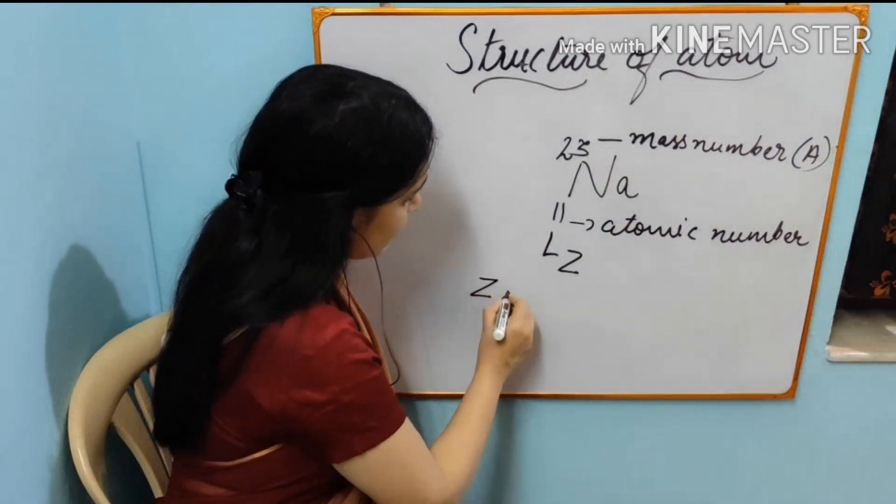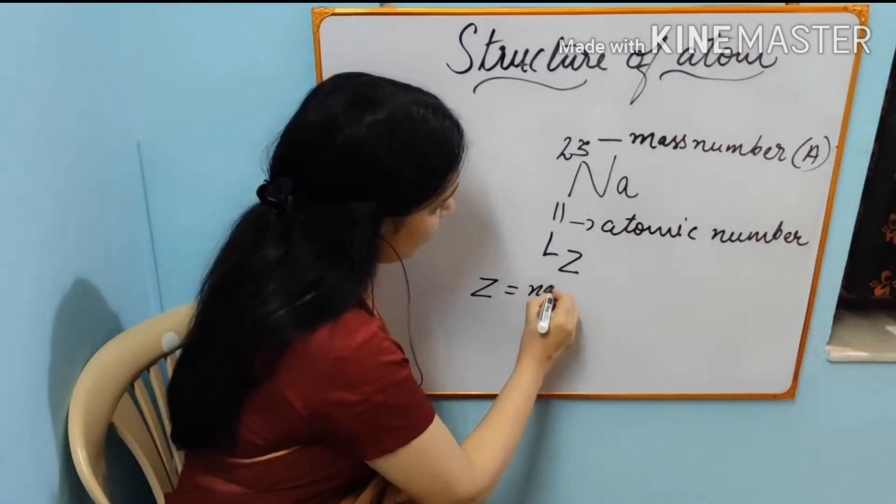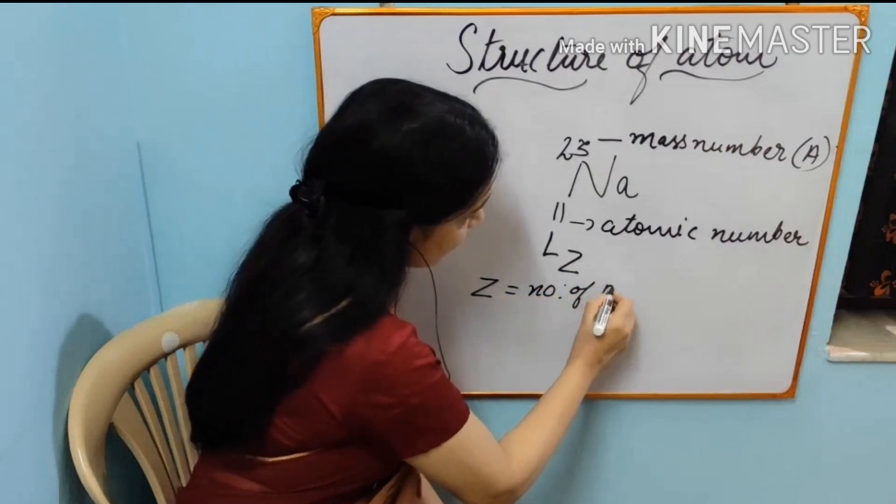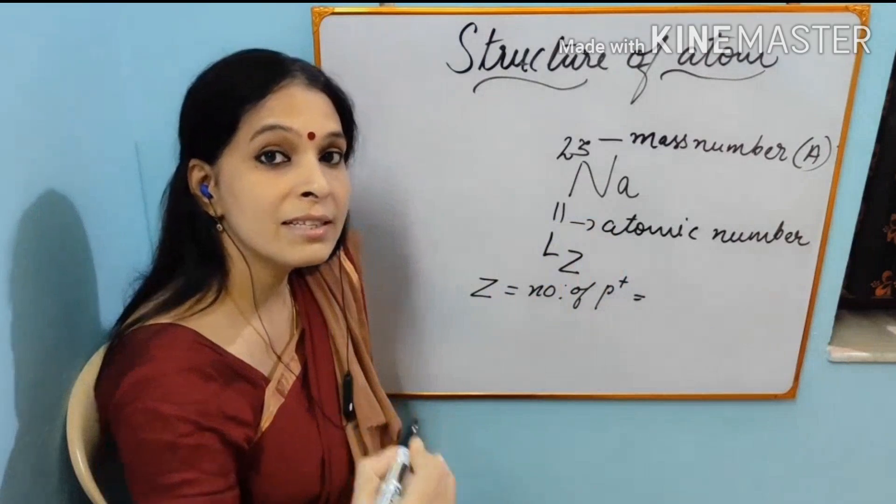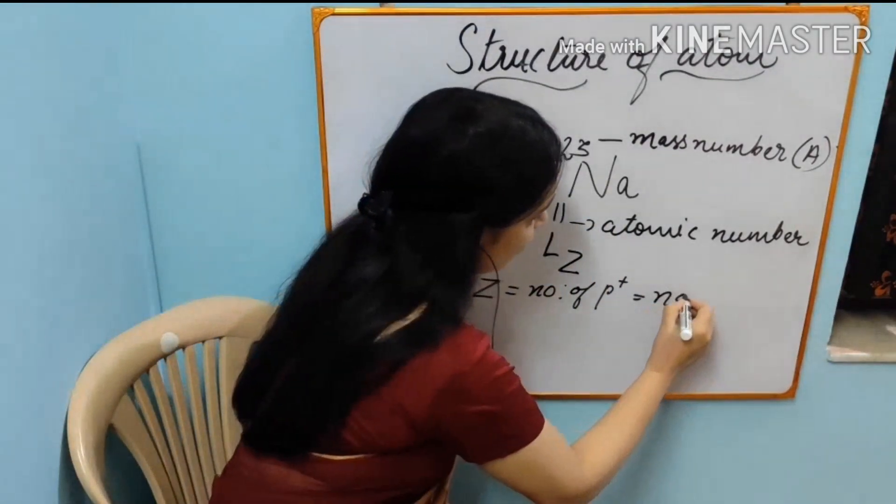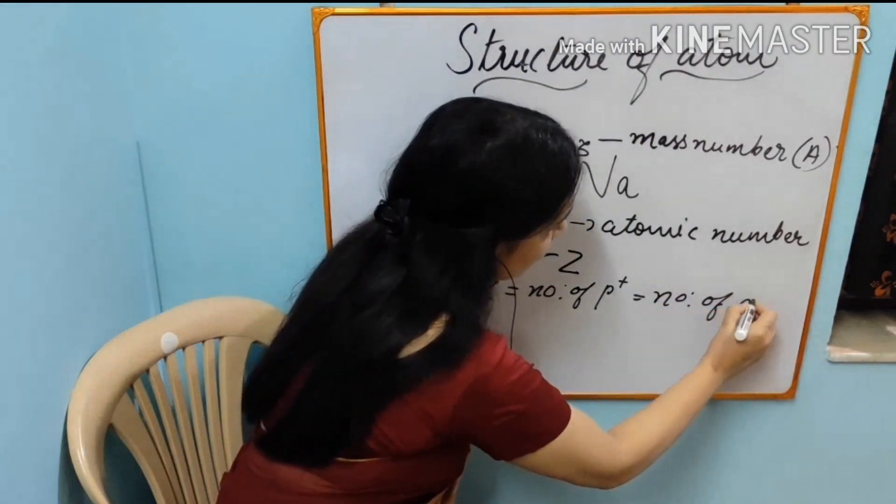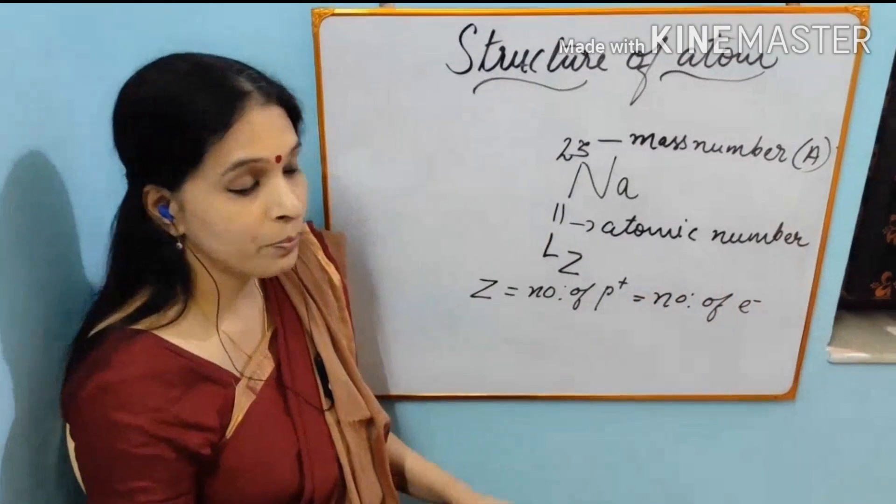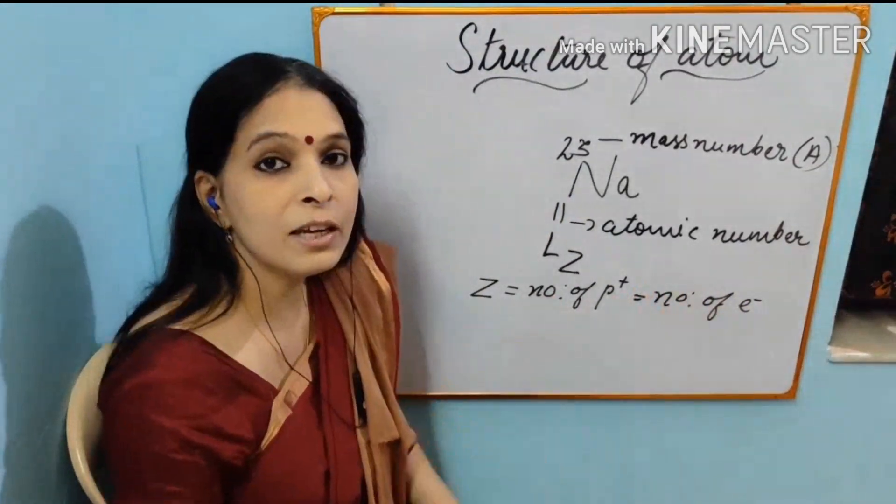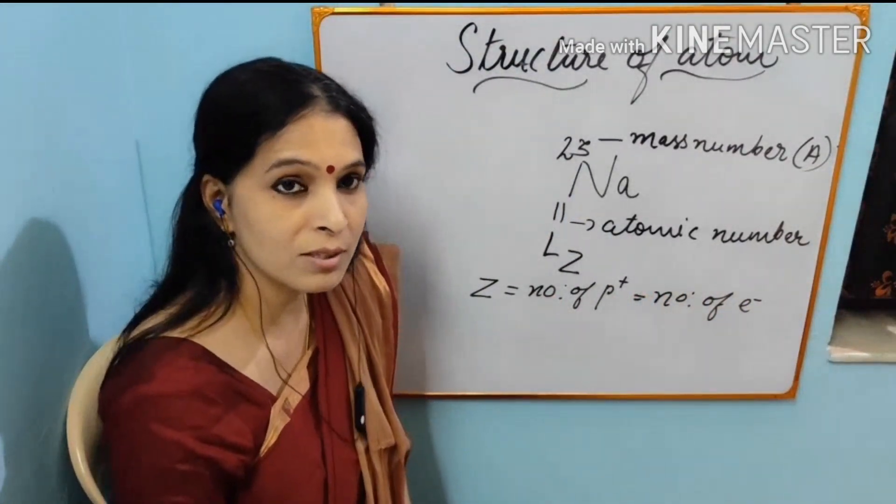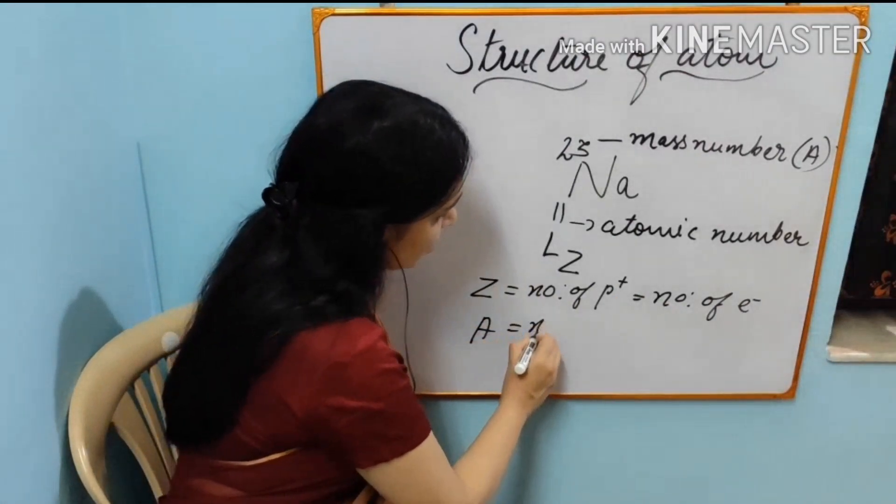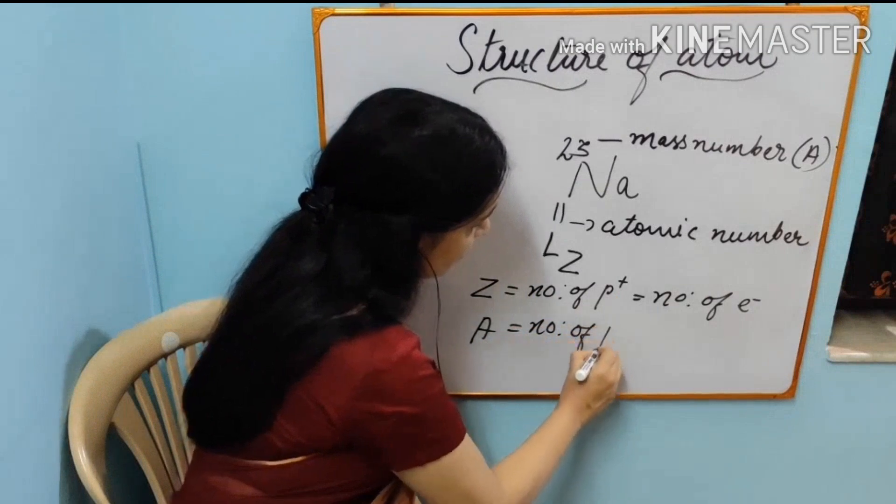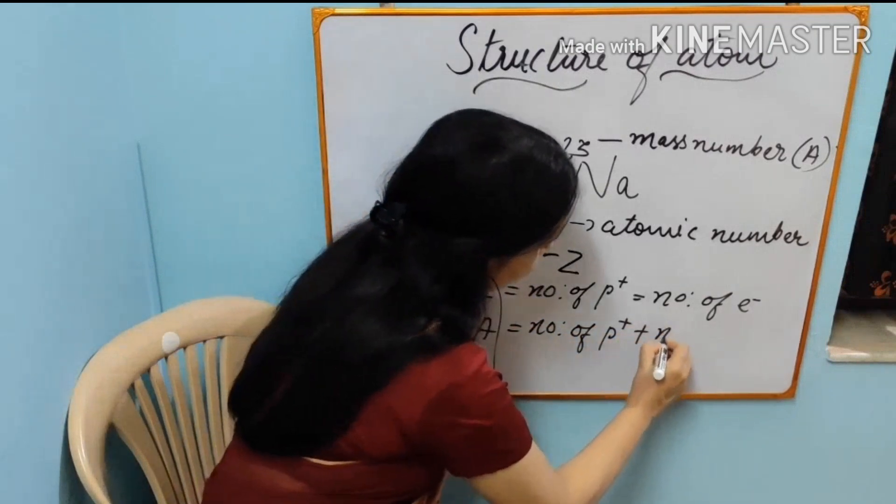Now what is atomic number? Atomic number z equal to number of protons which will be equal to number of electrons inside an atom. That means in a neutral atom number of protons will be equal to number of electrons. Now what is mass number? Mass number a is equal to number of protons plus number of neutrons.